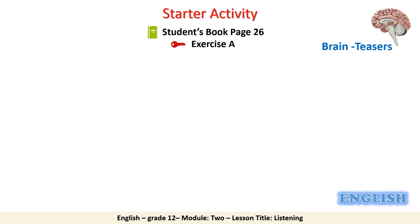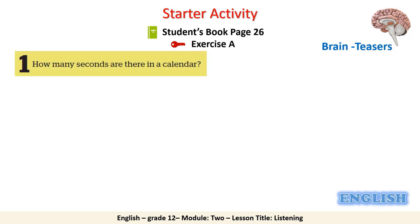Please go to your student's book and open it on page 26. Let's take the first example. It says: how many seconds are there in a calendar? The answer is 12. To get this answer, you need to understand the word 'seconds' as the ordinal number that comes after first, and not the unit for measuring time.